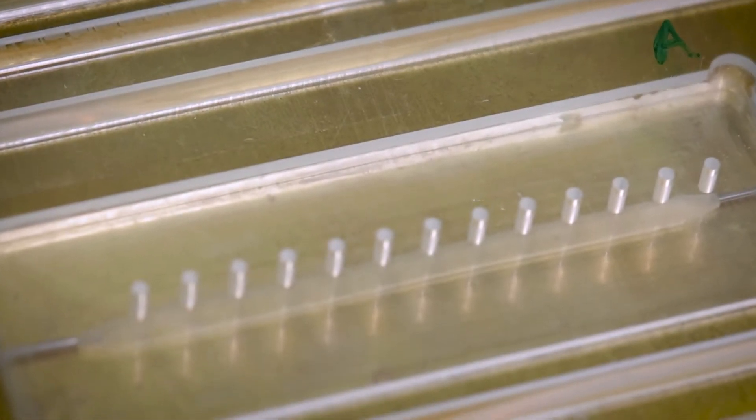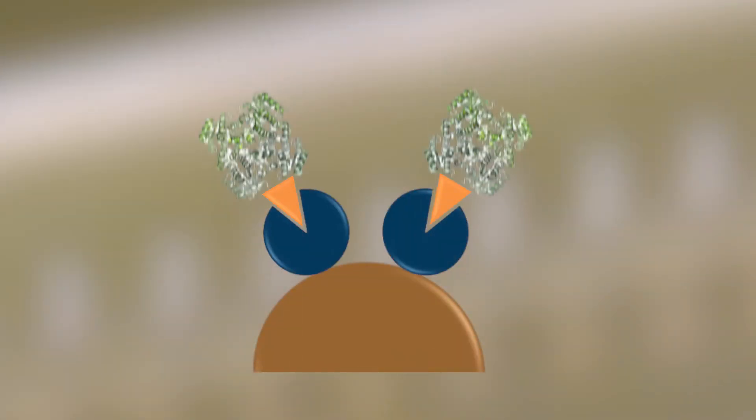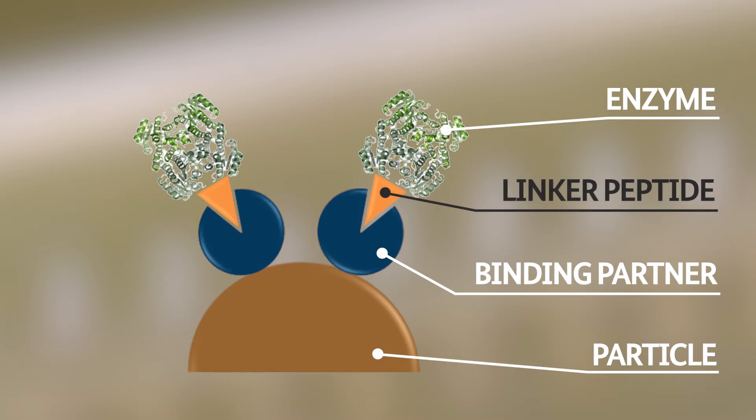The chip contains a magnet that attracts the enzymes, because they have previously been provided with binding molecules that adhere to iron particles. And these are held in place by the magnet.